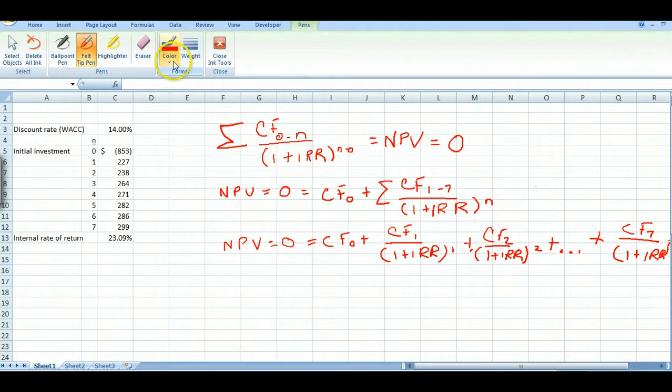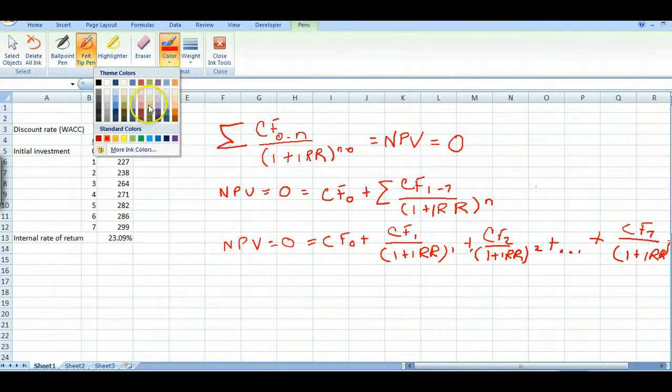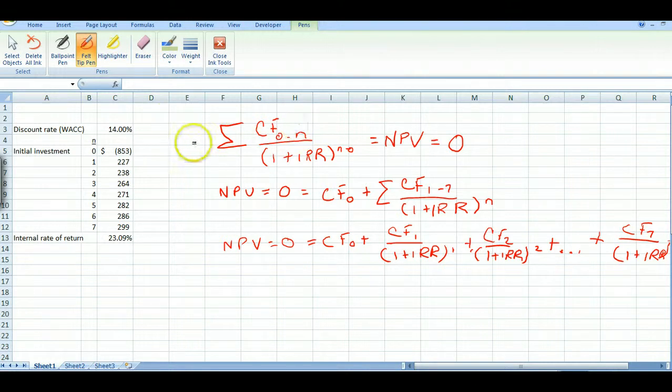I think you can understand it. And what we're trying to solve for, this is what we're solving for. We're solving for the internal rate of return. That's the unknown. We know all the other pieces. We've got our cash flows. We don't need the discount rate because that's what we're solving for. But we have our cash flows and we have our initial investment. And now we want to come up with our internal rate of return, which is what this 2309 down here is in our Excel worksheet. That's what we want to solve for.